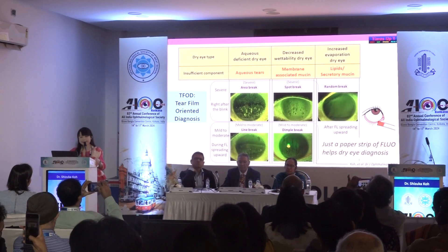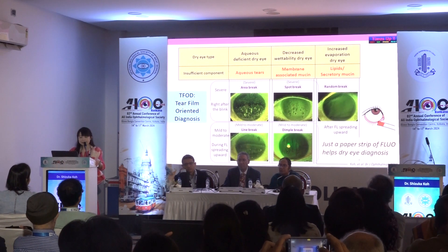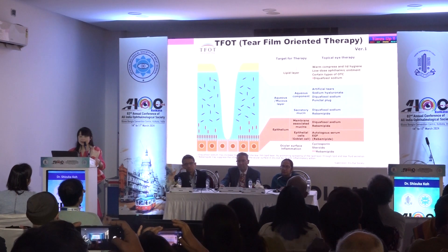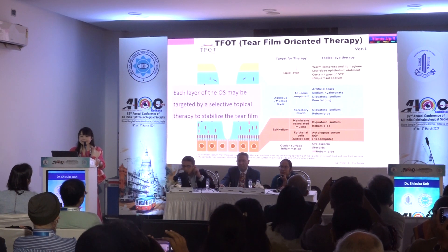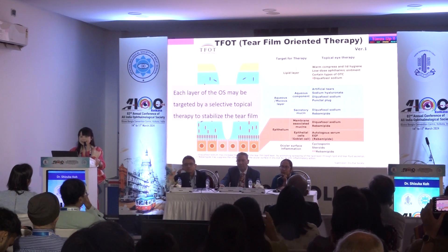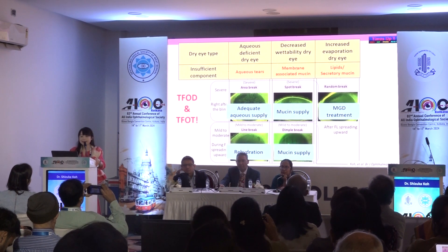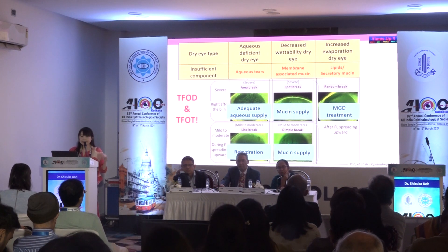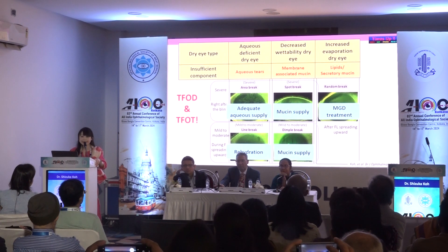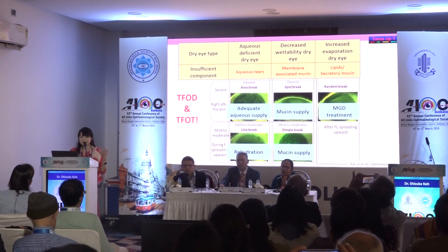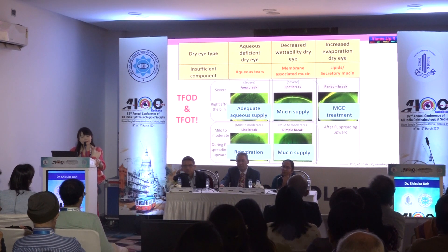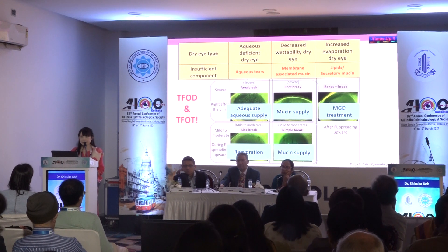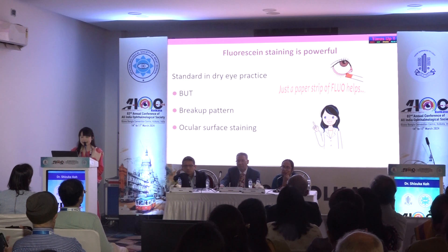This is a summary of TFOT, tear film-oriented diagnosis. You can perform it with just a paper strip. Let me also share about tear film-oriented therapy. Each layer of the ocular surface may be targeted by selective topical therapy to stabilize the tear film. In aqueous deficient dry eye, for area break we need adequate aqueous supply such as punctal plugs; for line break, we need rehydration. For decreased wettability dry eye — spot break or dimple break — we need mucin supply. For increased evaporation dry eye, we usually need MGD treatment. Fluorescein staining is powerful.